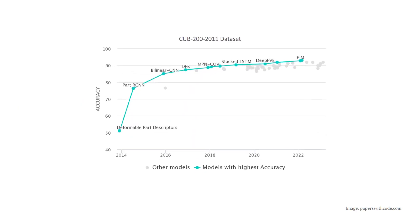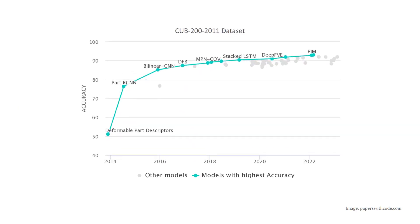While progress has been made in fine-grained recognition, it seems to be plateauing. New approaches often differentiate themselves by fractions of a percent in terms of prediction accuracy, which is the most common measure of comparison. But accuracy by itself doesn't tell the whole story.